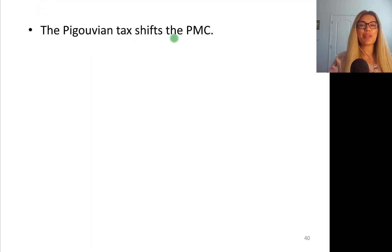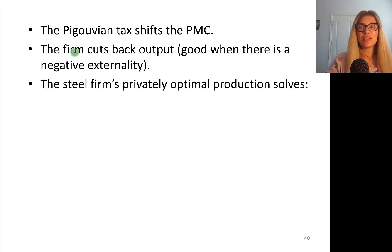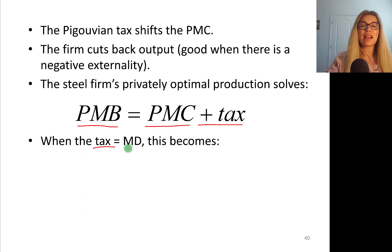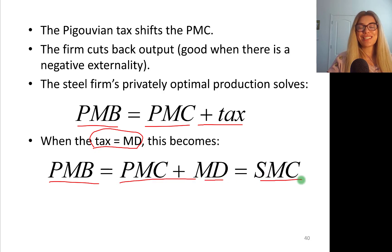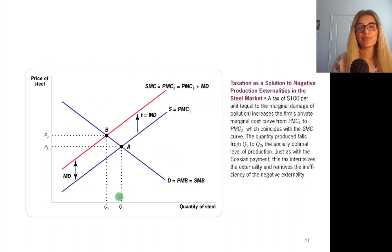To sum up: the Pigouvian tax shifts the private marginal cost curve and the firm cuts back on output. This is great because whenever we have a negative externality, there is overproduction. The steel firm's privately optimal production solves: private marginal benefit equals private marginal cost plus tax. When the tax is exactly equal to marginal damage, this becomes private marginal benefit equals private marginal cost plus marginal damage, which equals social marginal cost — exactly what we're trying to achieve. The last equation is used to determine the efficient, socially optimal level of production.